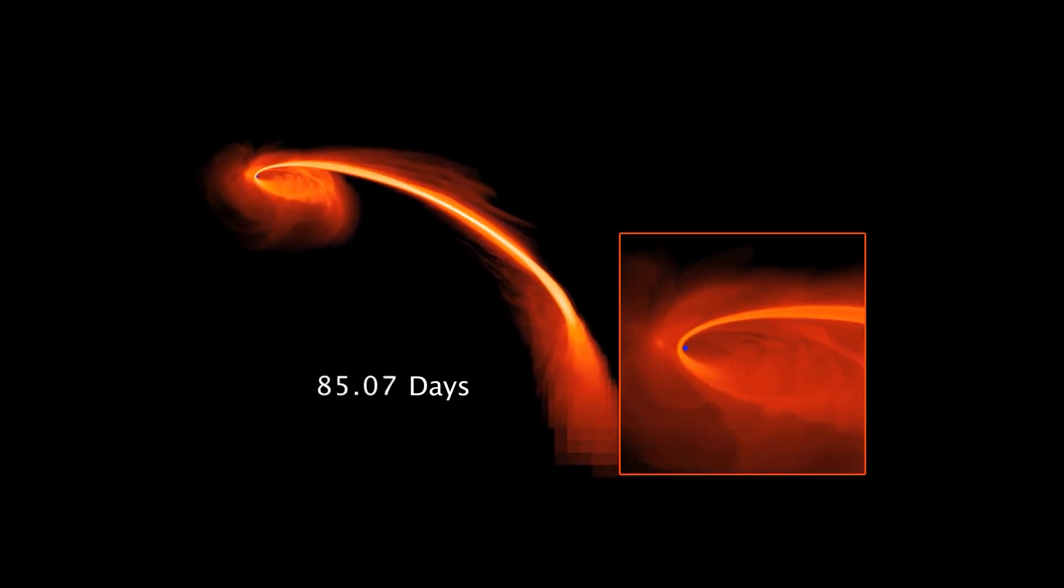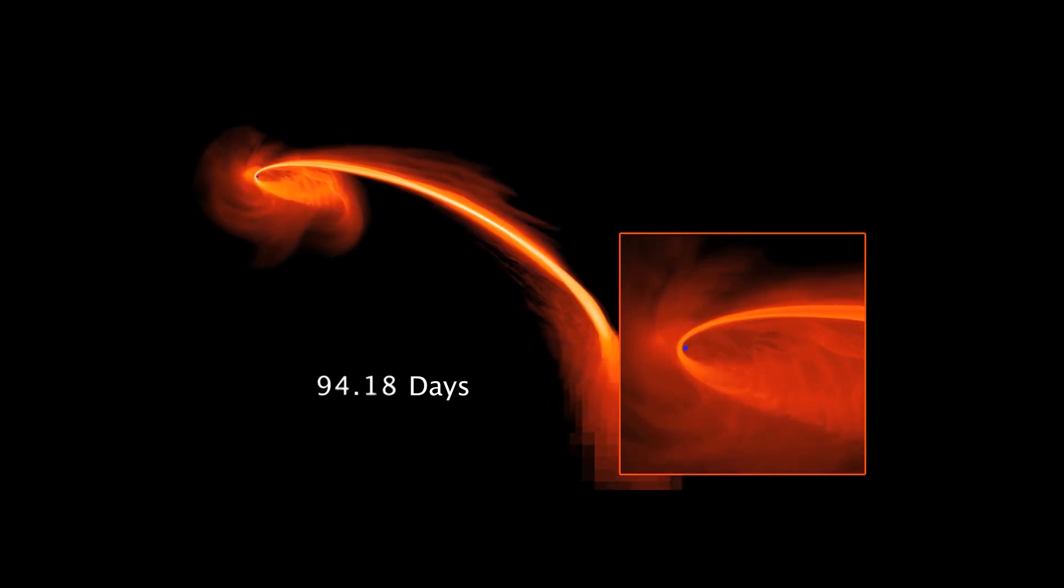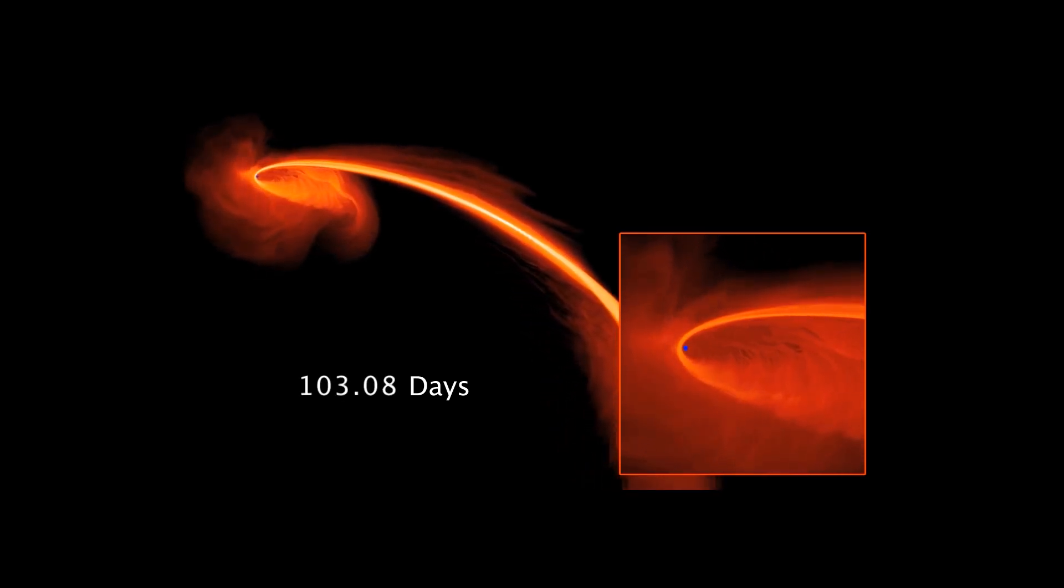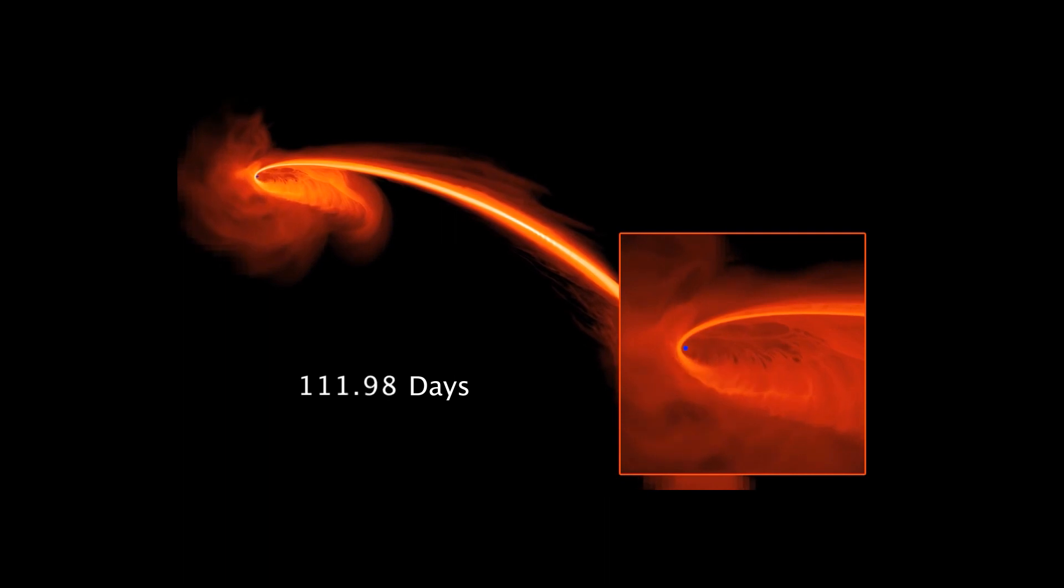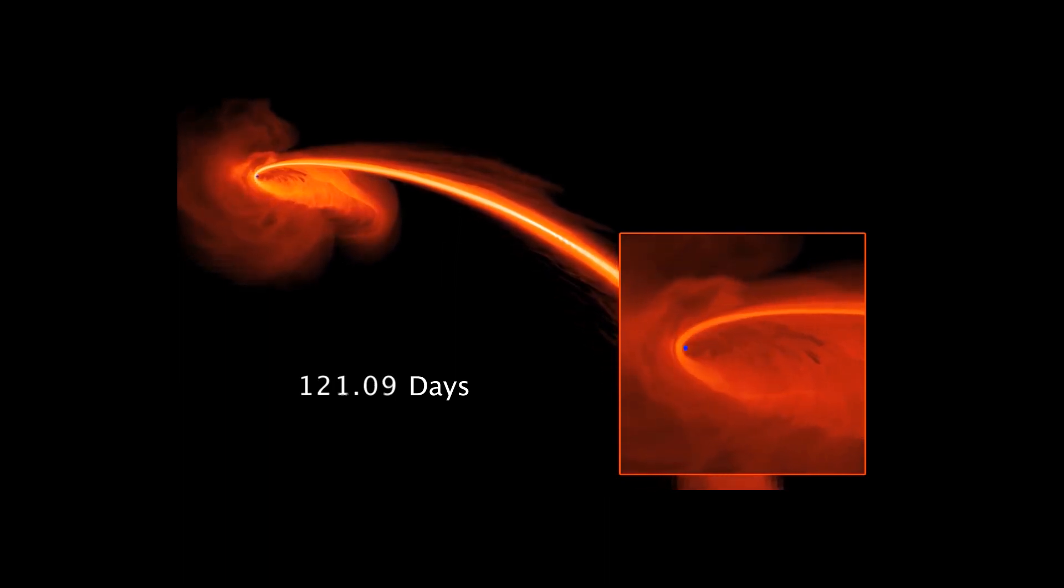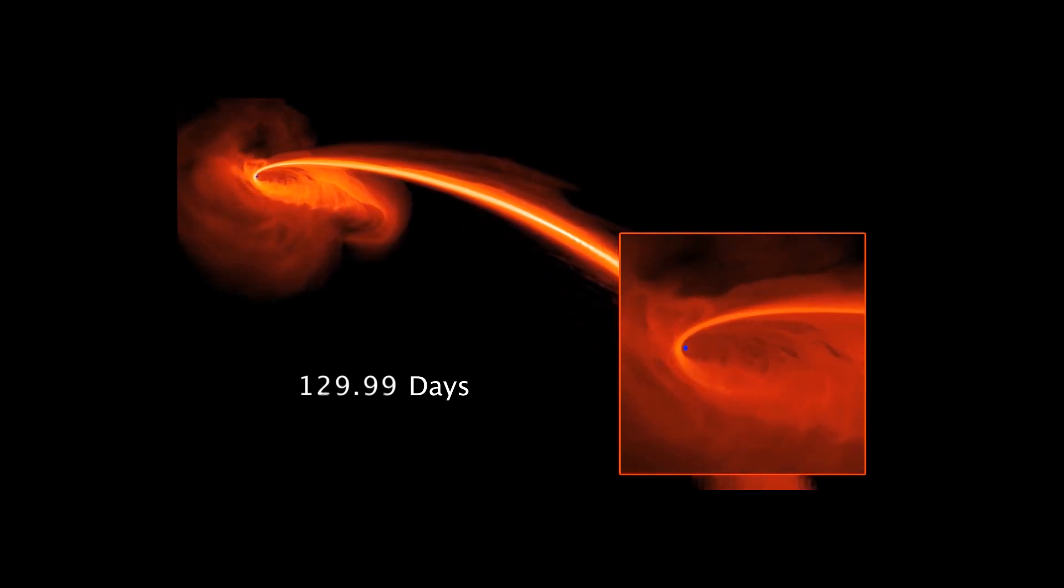The focus of the new study is an event called AT-2021-EHB, which happened in a galaxy with a central black hole about 10 million times the mass of our sun, about the difference between a bowling ball and the Titanic.